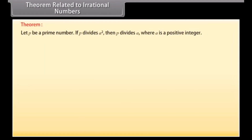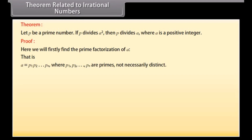Theorem related to irrational numbers: Let p be a prime number. If p divides a², then p divides a, where a is a positive integer. Proof: We first find the prime factorization of a: a = p₁ · p₂ · ... · pₙ, where p₁, p₂, ..., pₙ are primes (not necessarily distinct). Therefore a² = (p₁ · p₂ · ... · pₙ)² = p₁² · p₂² · ... · pₙ².